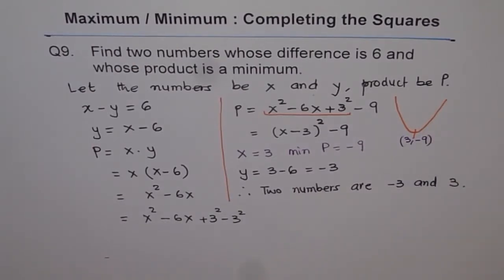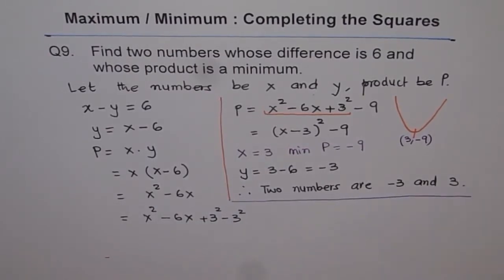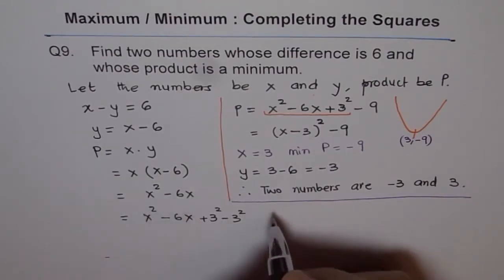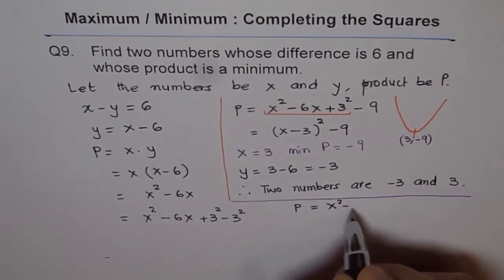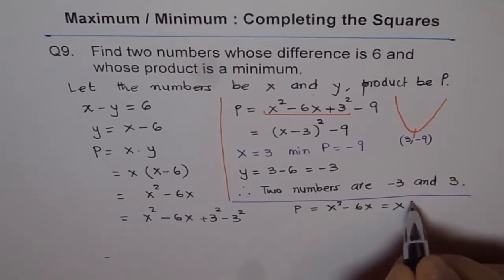I can also show you how we could have got this answer using partial factoring or factoring. We had the statement P equals x squared minus 6x. Let me rewrite this: P equals x squared minus 6x. This can be factored. I can take x common, so I get x(x minus six).